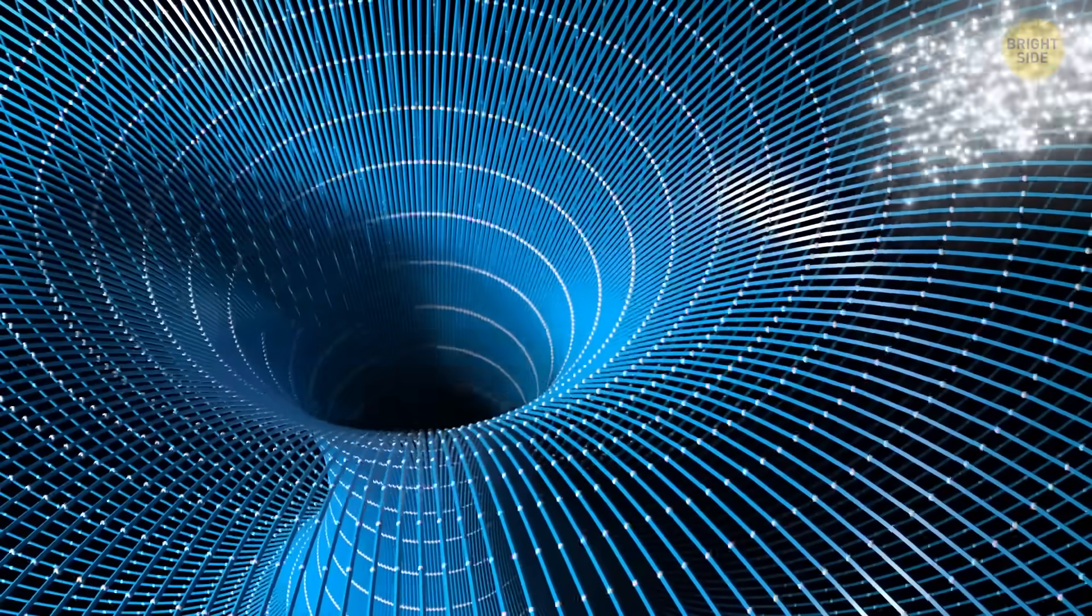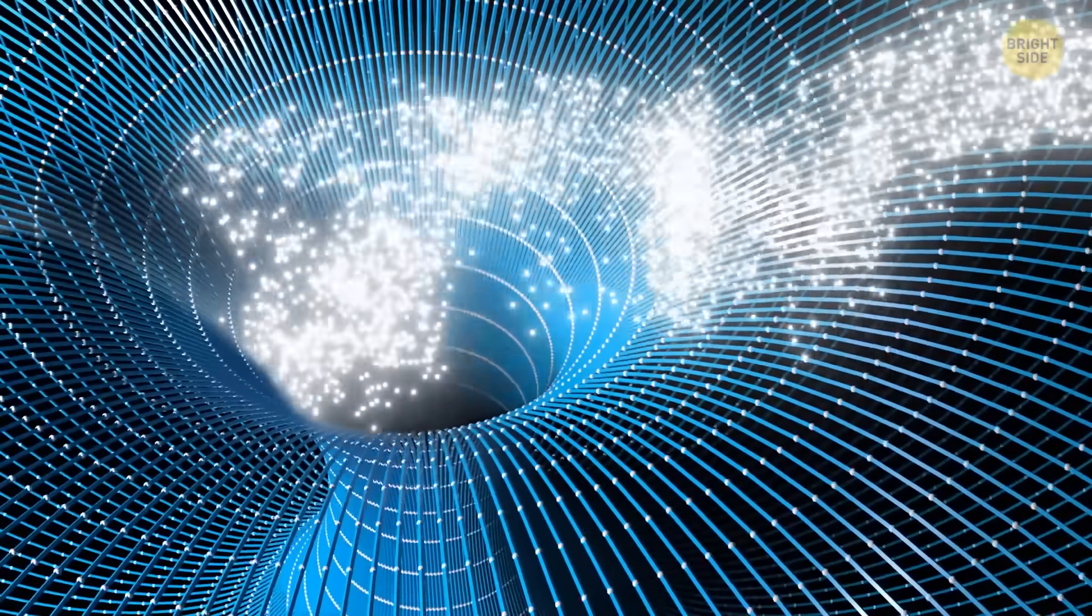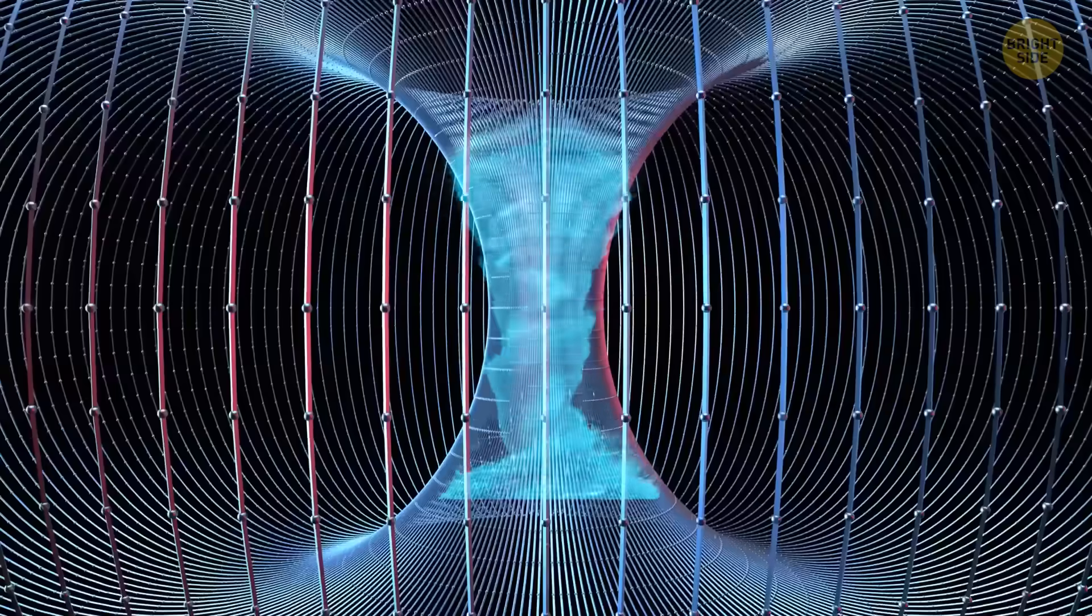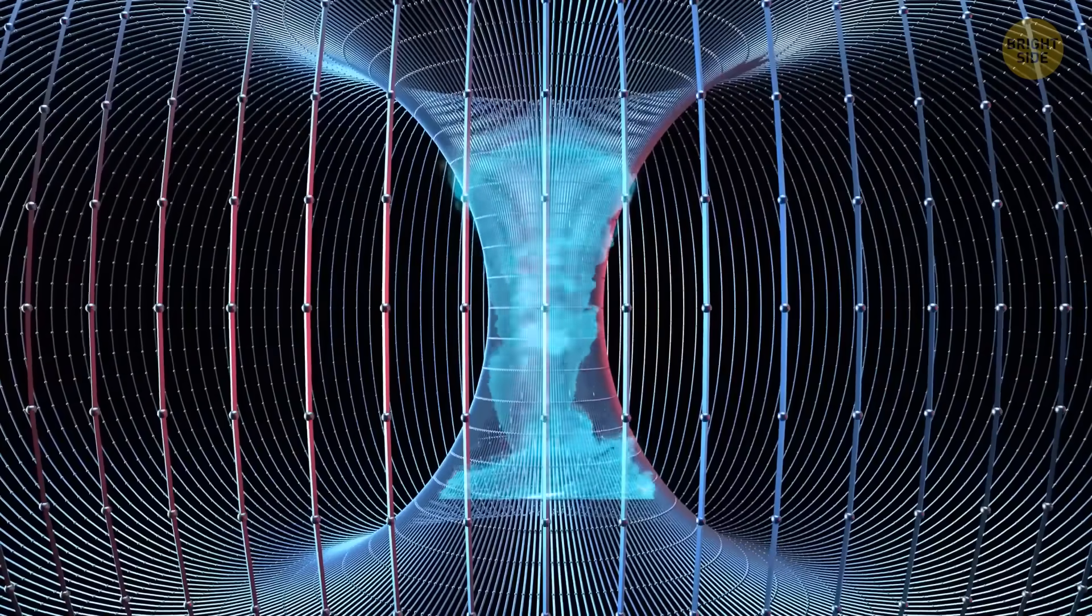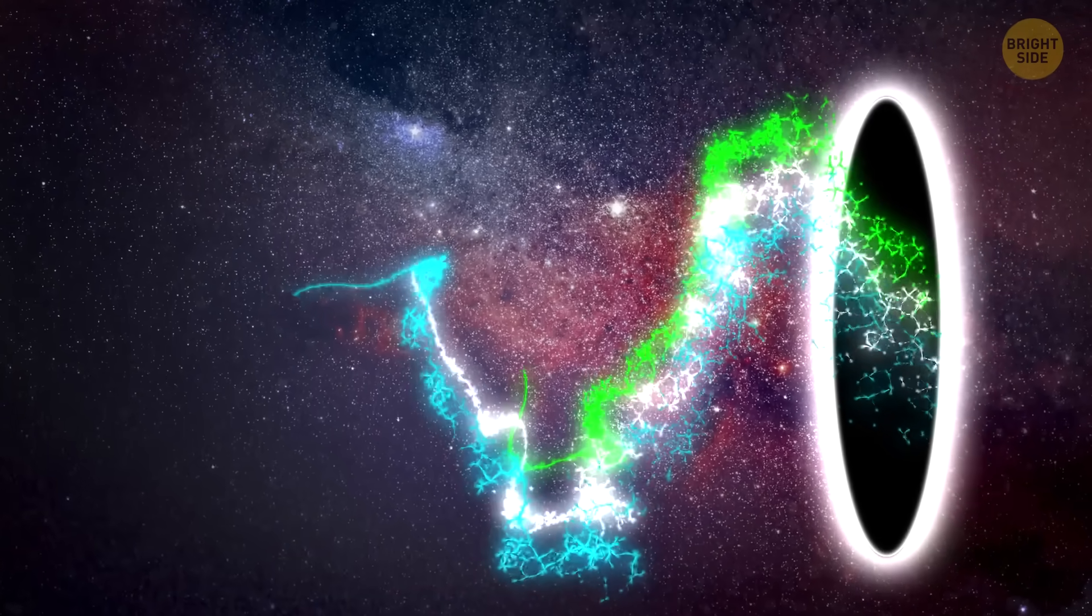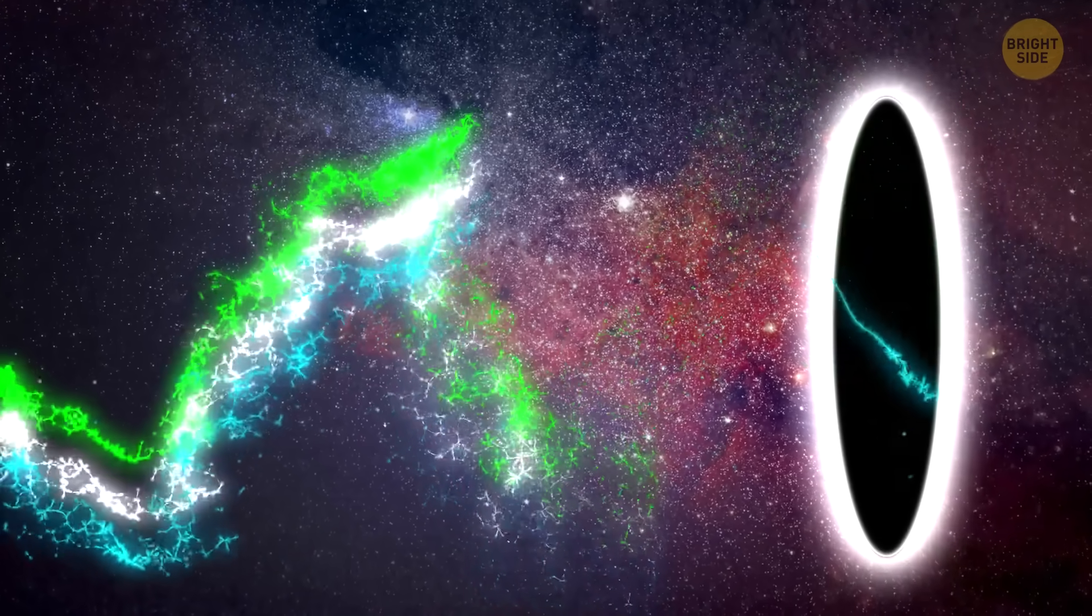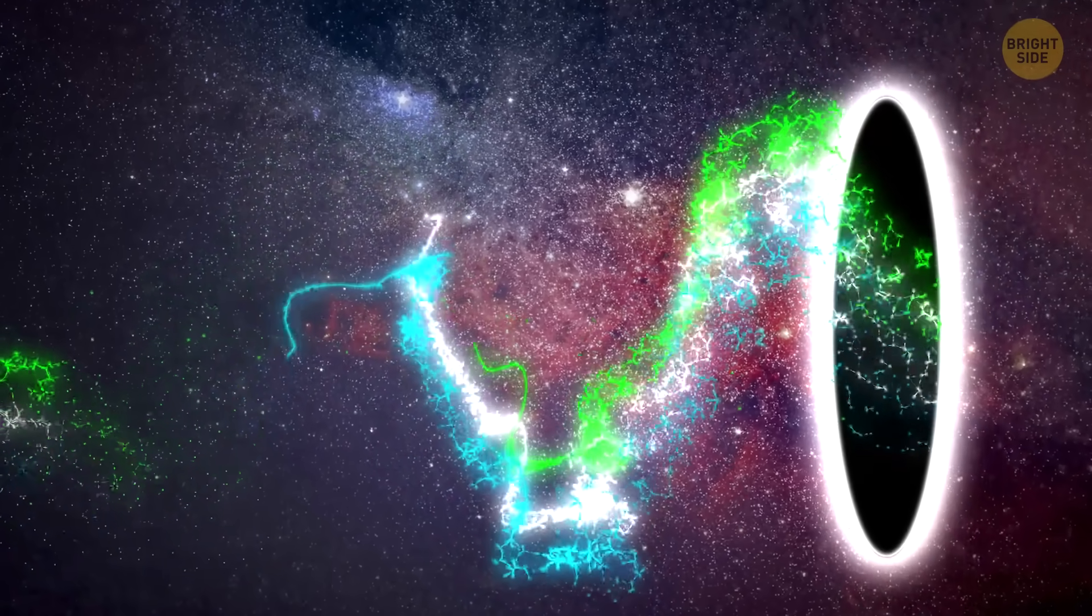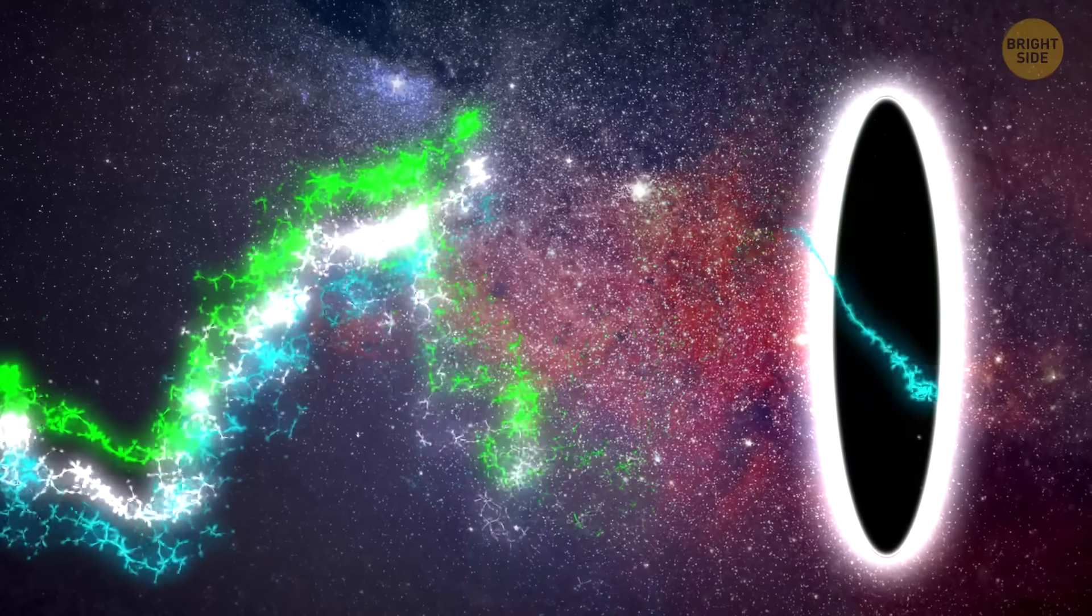If a wormhole started eating stuff like dust, gas, or space debris, it would create a plasma tornado, a literal space firestorm in its throat. And this twisty storm would eventually blast out the other side of the wormhole, firing hot plasma at nearly 125 million miles per hour. That's about one-fifth the speed of light.